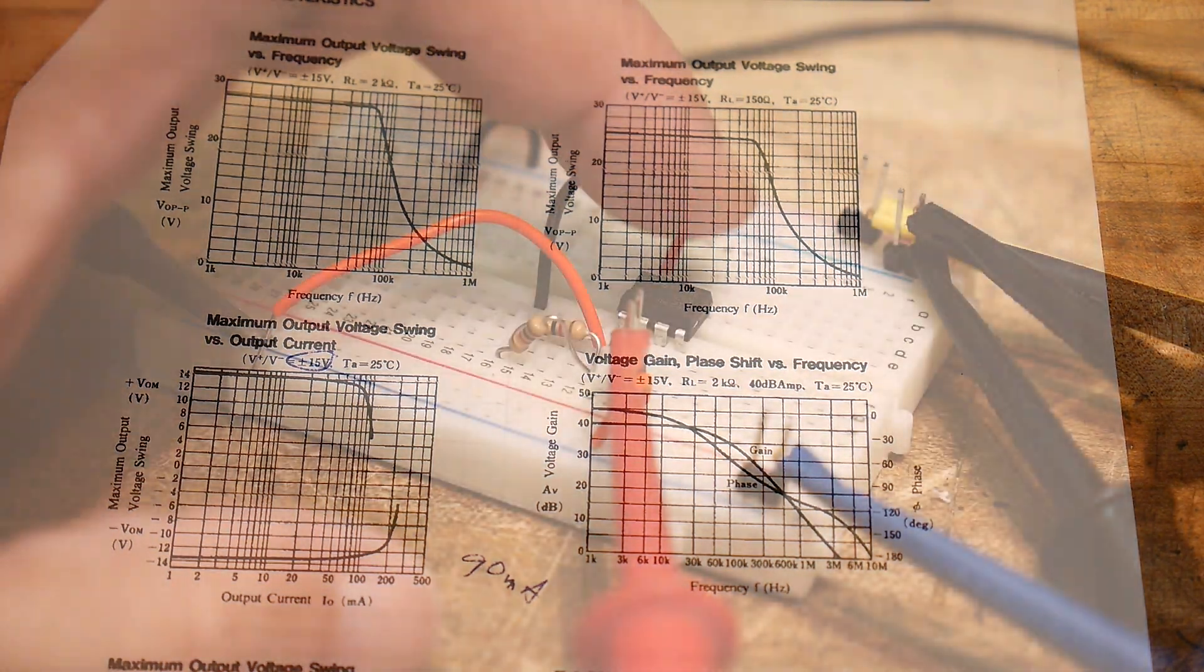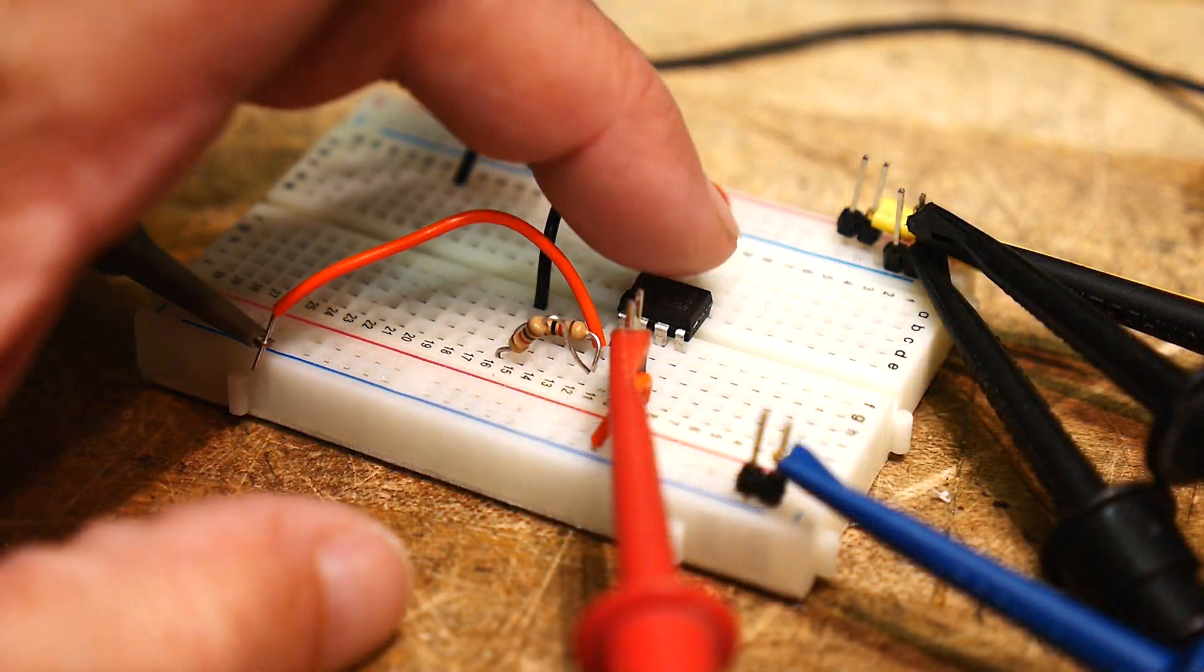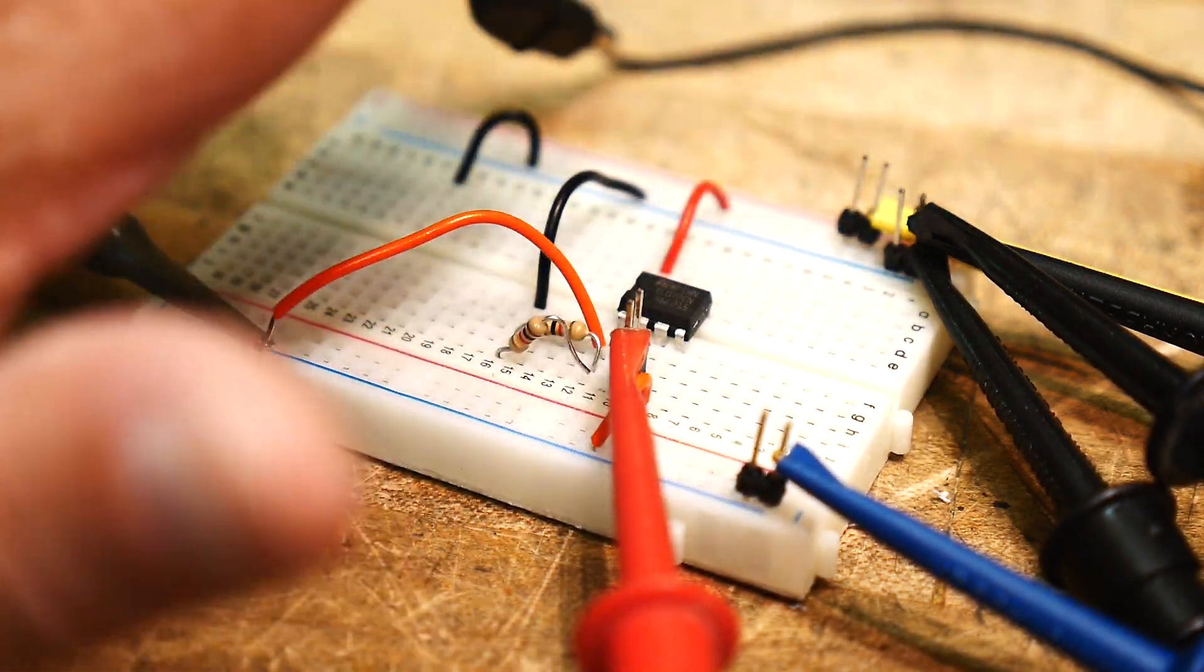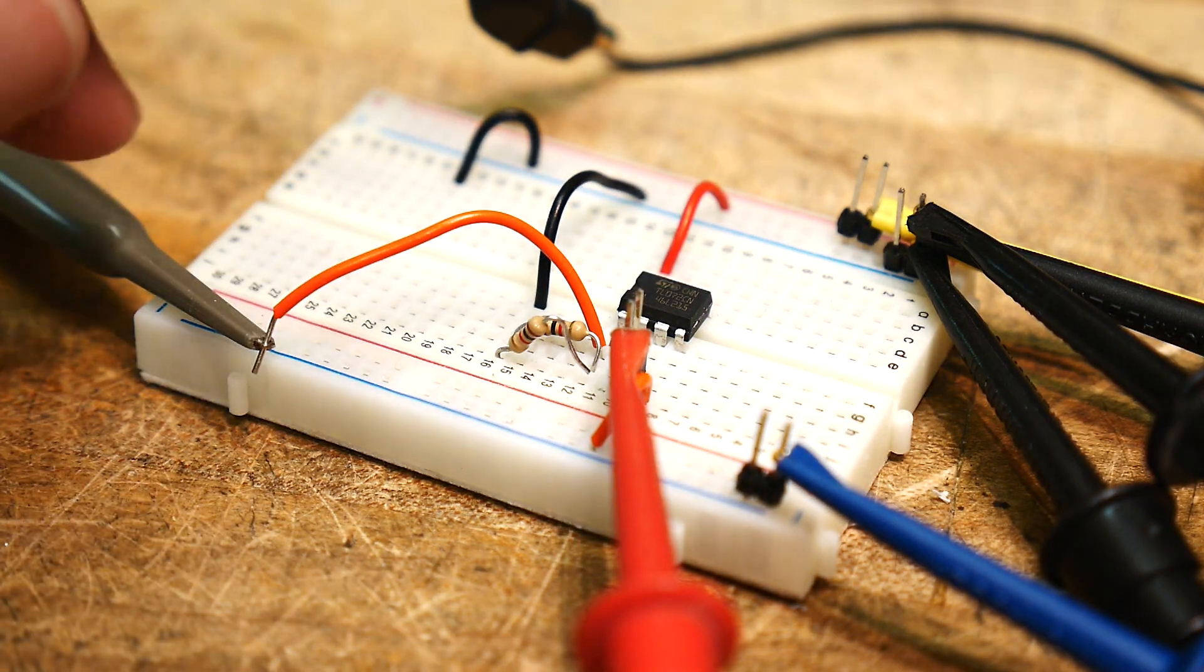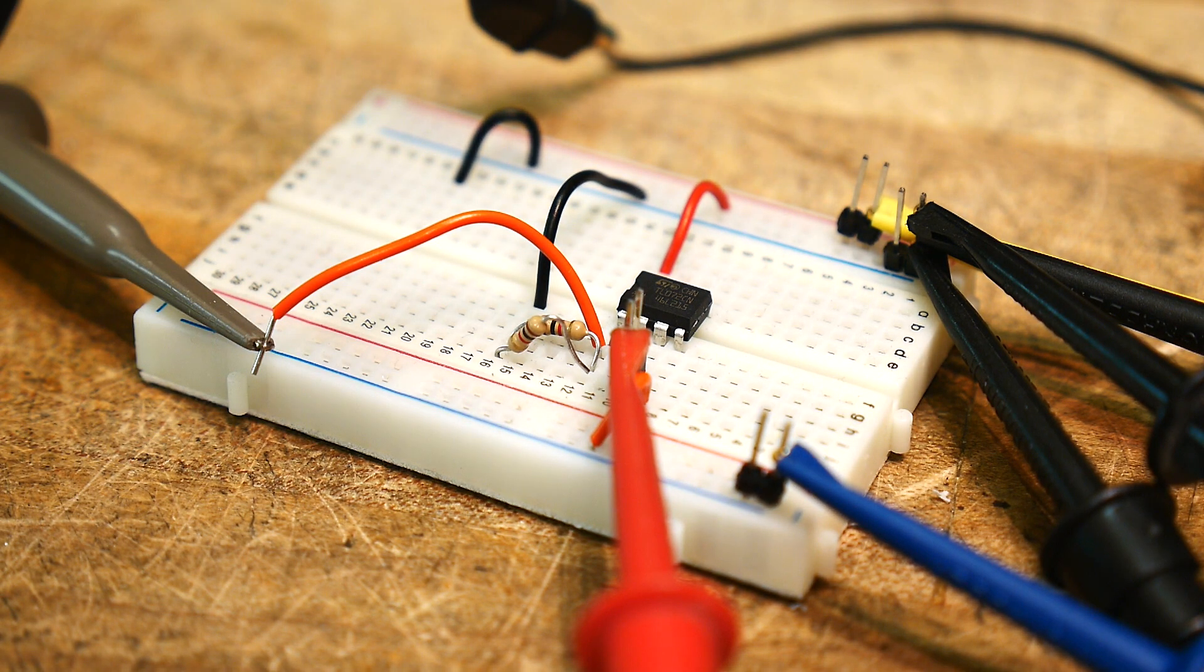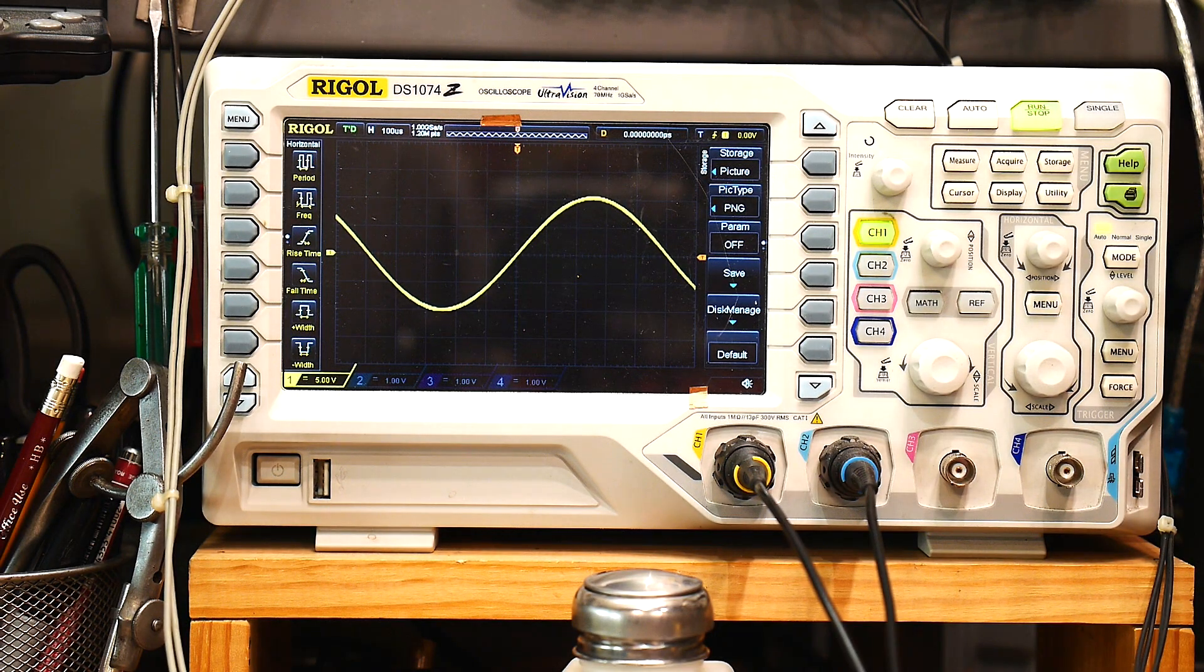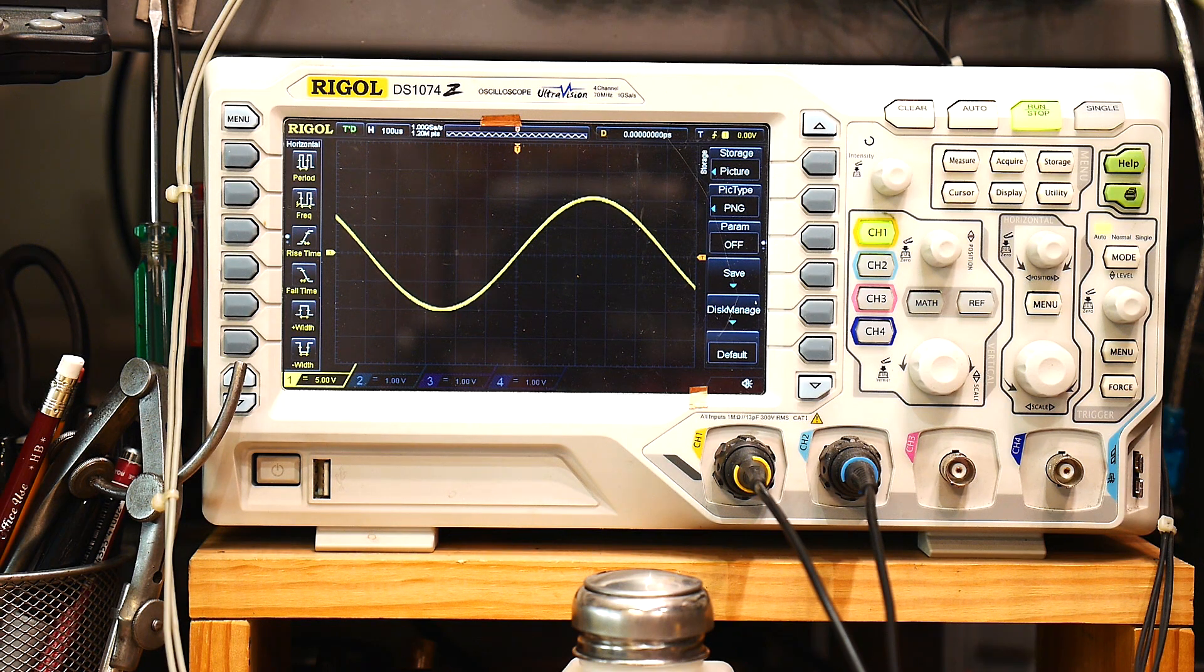All right, so I have on the breadboard here a TL072 op amp. I'm operating it at plus or minus 15 volts as per the datasheet. And I'm inputting a 10 volt peak-to-peak sine wave. So we are right at the limit there. And we see that we're getting a 10 volt peak-to-peak here. These are 5 volts per division. So minus 10 and plus 10.